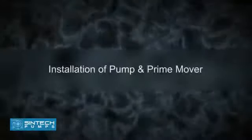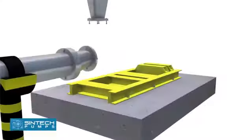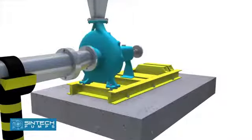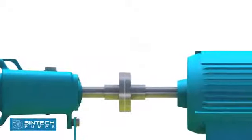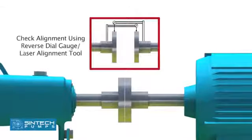Installation of pump and prime mover: The pump and motor unit needs to be fitted firmly onto the base frame using nuts and bolts before fitting in any pipes. It is essential to confirm the distance between the shaft ends. In the subsequent step, the pump and motor are aligned to the final tolerance using a reverse dial gauge or laser alignment tool.